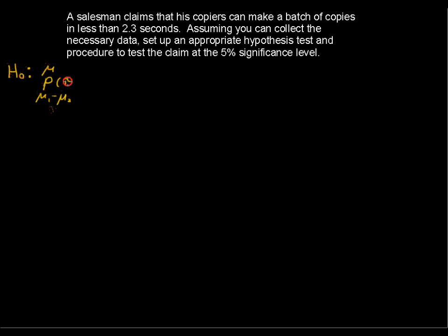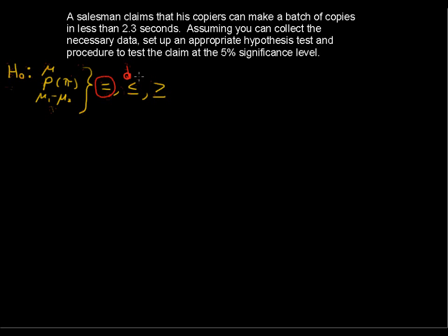The population proportion is pi in some books. I'll use p because other books use p for the population proportion and p-hat for the sample proportion. We're testing that one of those parameters is either equal to, less than or equal to, or greater than or equal to some value. It's technically correct to just say equal to. The similarity of all three is that they all have an equal sign attached. Technically, the null hypothesis is just equals.